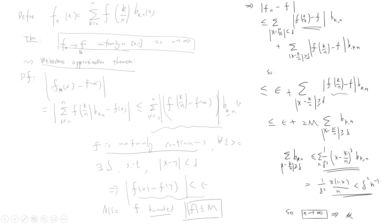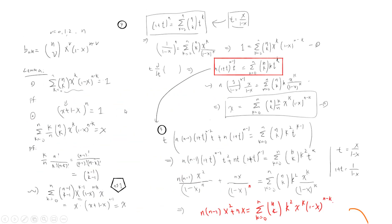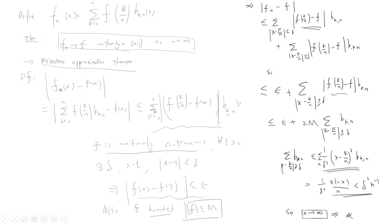To prove uniform convergence, we need to bound the error |f - f_n|. We can write f_n - f as the sum of f(k/n) times b_{k,n} minus f(x). Since the sum of b_{k,n} equals 1, we can write f(x) as f(x) times the sum of b_{k,n}, then apply the triangle inequality to bound the two resulting terms.